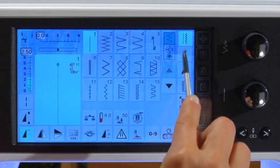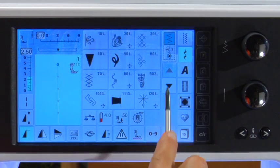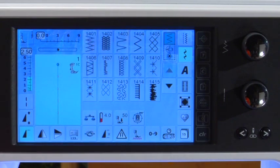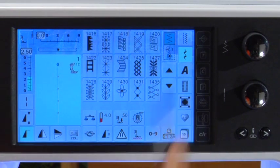Go to the Decorative Stitches menu and scroll down to the tapering icon. Touch the icon and a special screen appears with a selection of stitches to use with the tapering function.